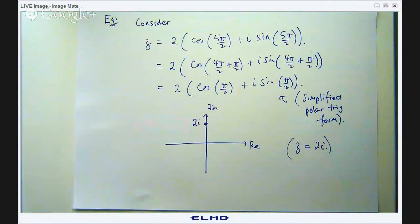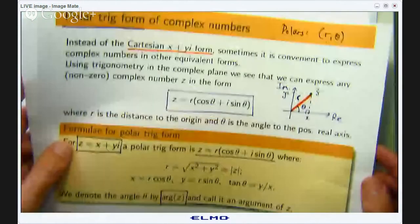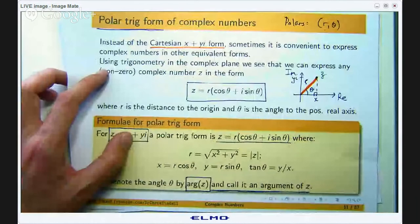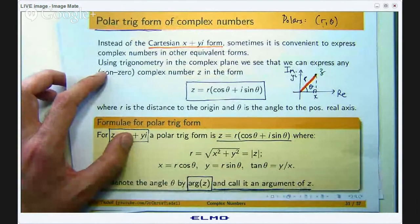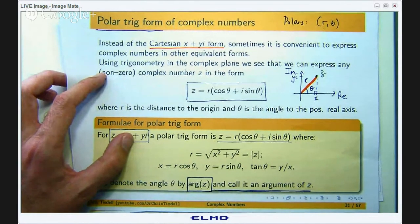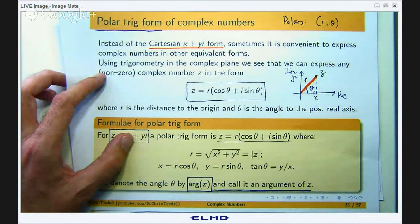Now there are other ways of writing complex numbers using lengths and angles. There is also instead of this form which I have called the polar trig form, there is also a way of using an exponential function. Some books also refer to that as a polar form but I am going to call that a polar exponential form. We will look at that in the next video and see how that can help us too.